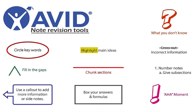Circle vocabulary words, terms, and key phrases. Fill in the gaps. Use a caret when something is missing or you need to rephrase a sentence. If you missed a large portion of information, use a callout to write your information elsewhere and redirect it to the location you want.